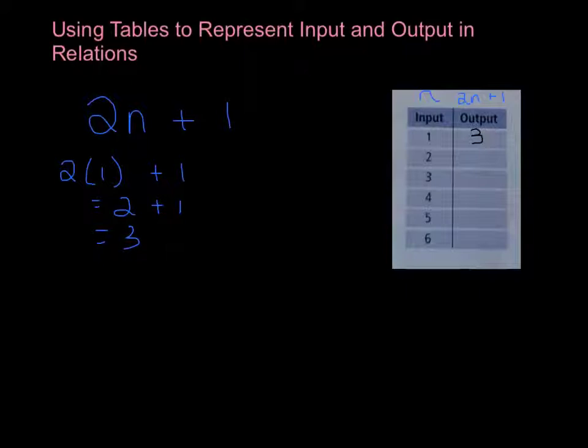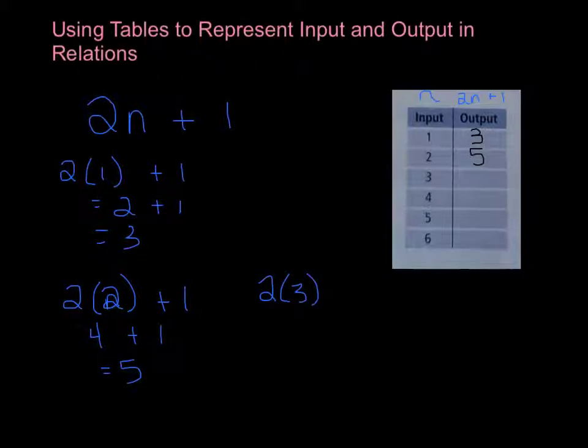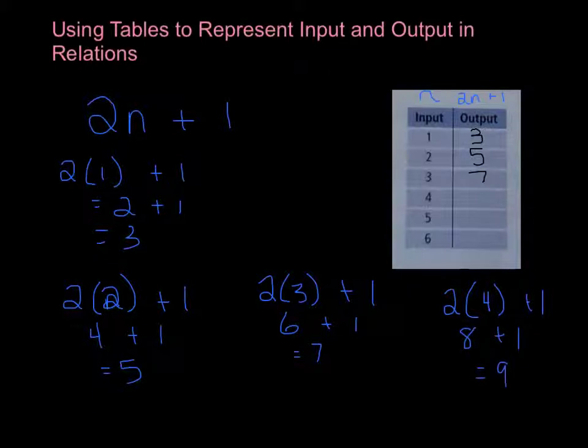If we wanted to input 2, we would just replace our variable with 2 plus 1. So 2 multiplied by 2 is 4 plus 1. Our output for 2 would be 5. For 3, we replace our variable with 3. So 2 multiplied by 3 is 6. 6 plus 1 is 7. So when our input is 3, our output is 7. We'll do one more. For 4, we replace our variable, which is n, with 4. 2 multiplied by 4 is 8. 8 plus 1, our output would be 9.